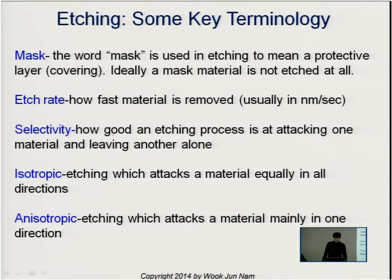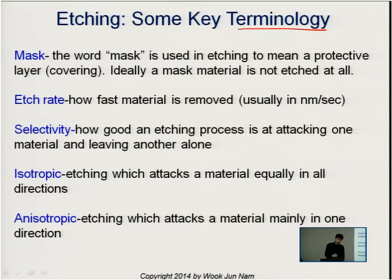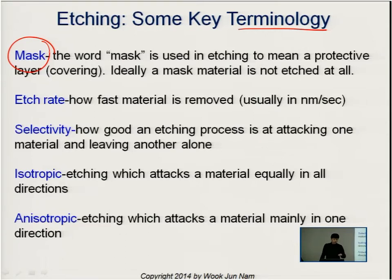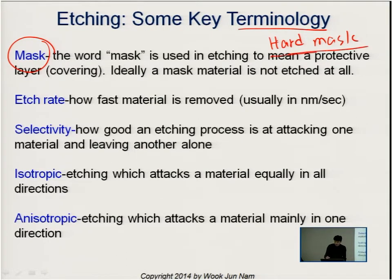Before we talk about etching, let's cover the terminology. For etching, we need a mask. We need to transfer some of the design to the substrate — we want some areas of the substrate to remain non-etched and some areas etched. For that purpose we need a mask, which can be a photoresist or, if the material is tough to etch, a hard mask made of inorganic material.